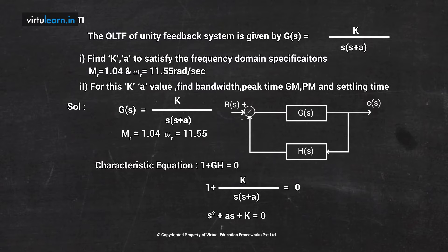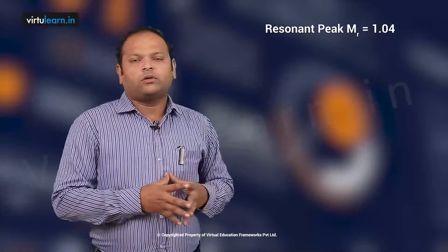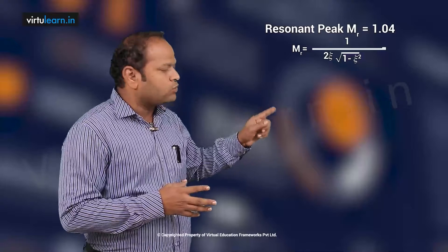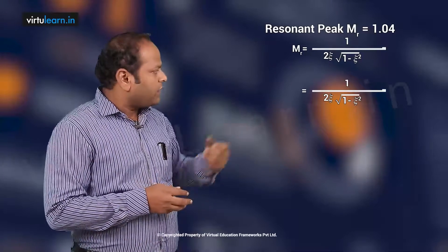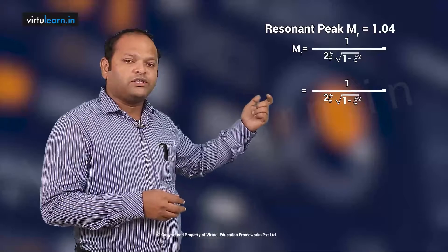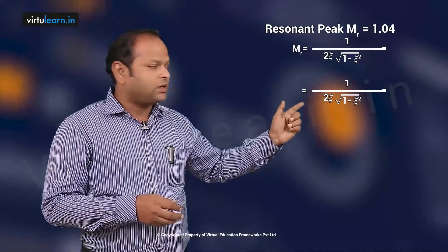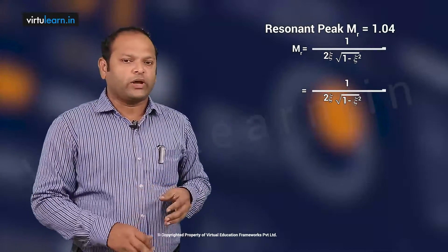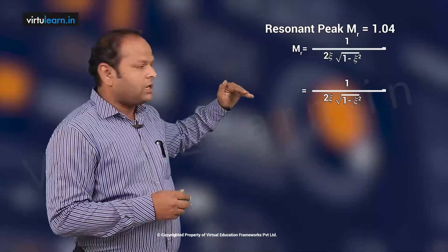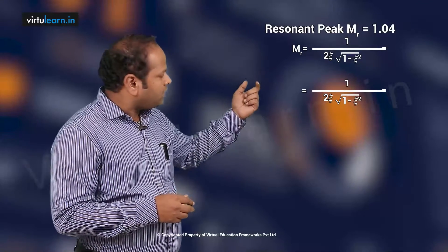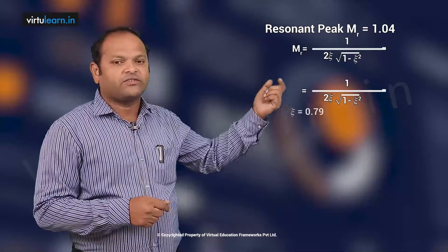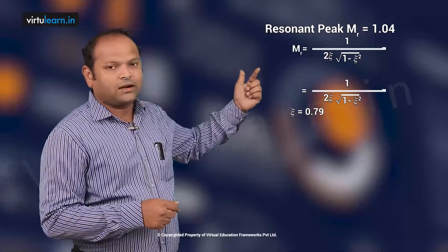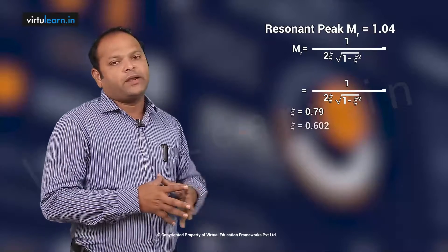Knowing ωn and ζ, we can find k and a. From the resonant peak specification Mr = 1.04, using the formula Mr = 1 / (2ζ√(1 − ζ²)), we substitute and solve. Solving this yields two values of ζ: 0.79 and 0.602.